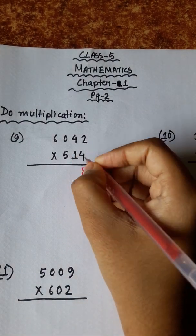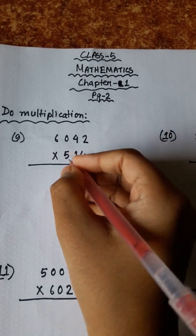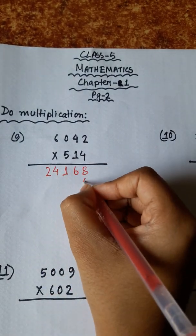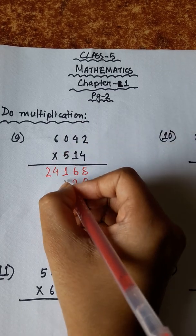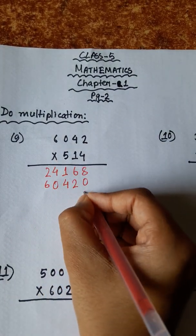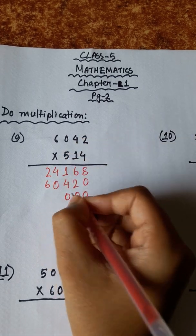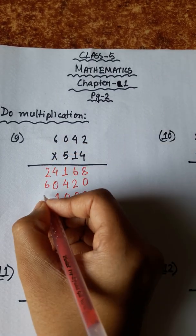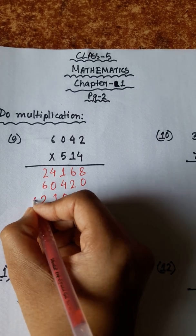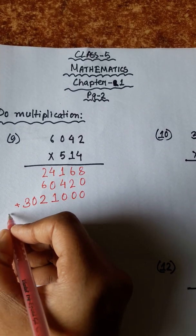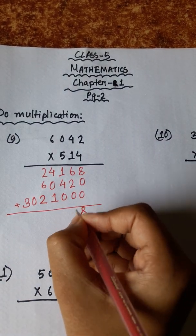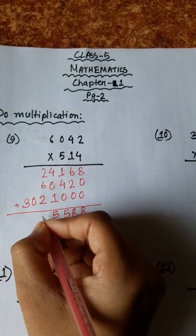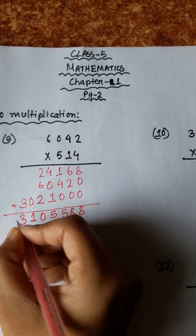4 twos are 8, carry 1. 4 zeros are zero, plus 1 is 1. 4 sixes are 24. 2 ones are 2. 4 ones are 4. 6 ones are 6. 5 twos are 10. 5 fours are 20, plus 1 is 21, carry 2. 5 zeros are zero, plus 2 is 2. 5 sixes are 30. 8 plus 2 is 10, carry 1. 0 plus 1 is 1, then 3.